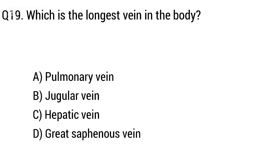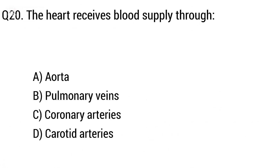Question 19: Options include pulmonary vein, jugular vein, hepatic vein. The right answer is option D, great saphenous vein.